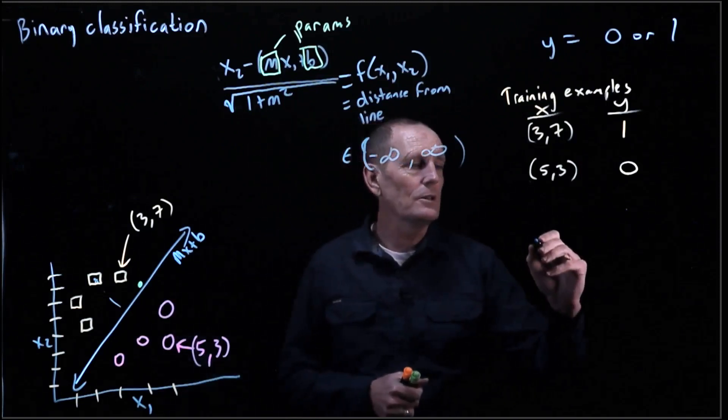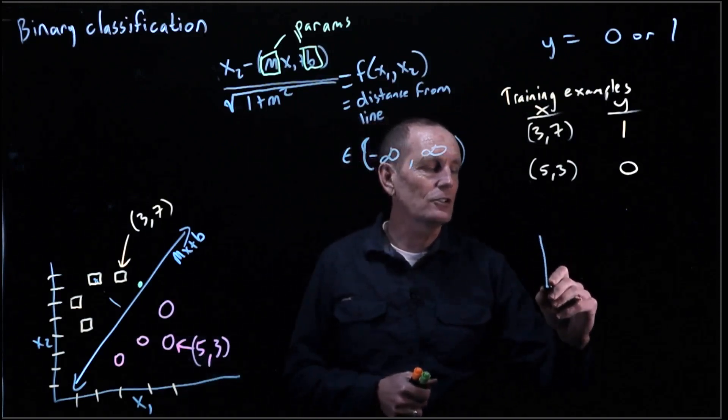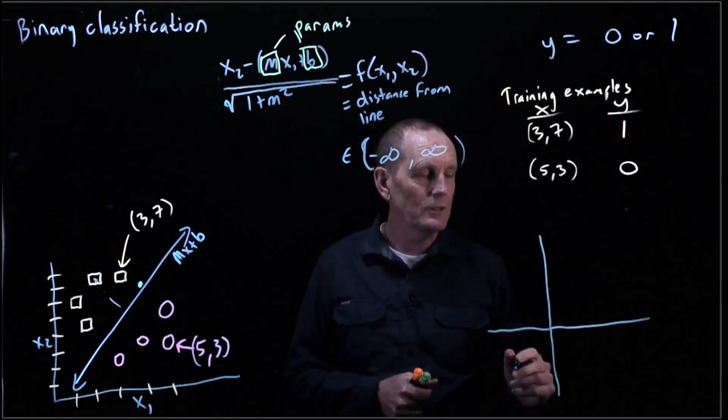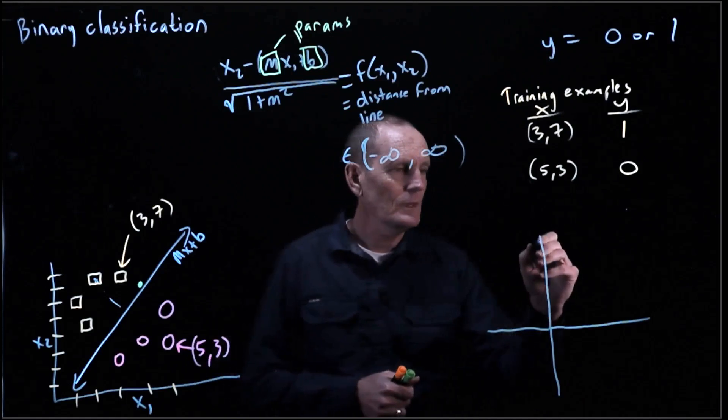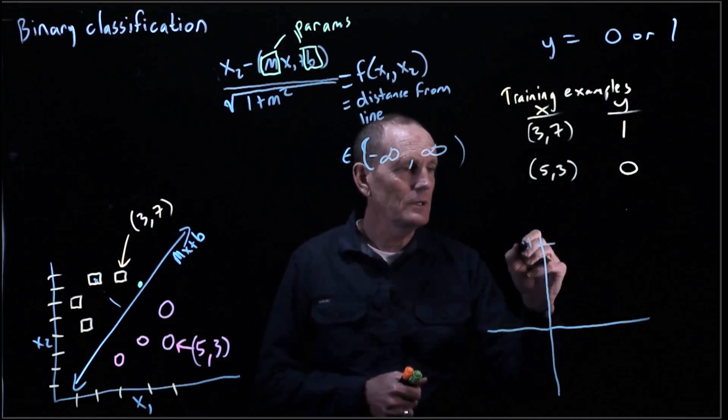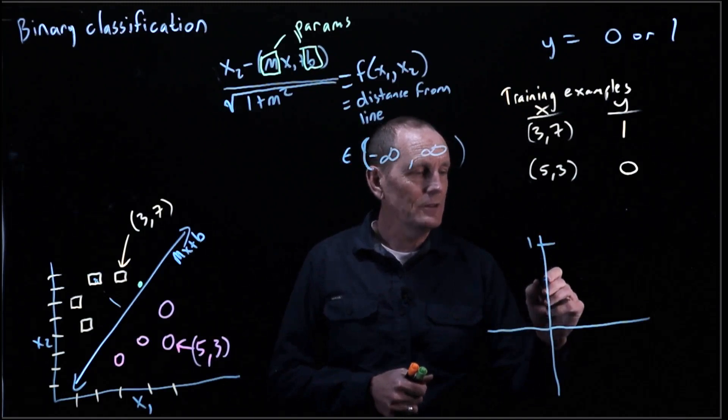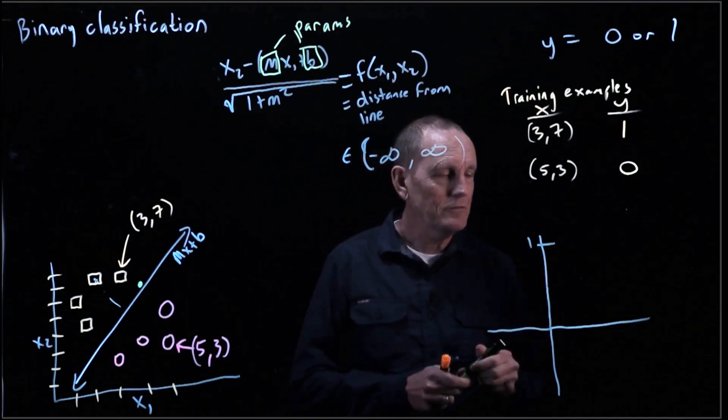So we're going to go ahead and do that with a particular function. So our function is going to have the following form. So let's make this be 1. This function, when x is 0, is going to have a value of 1 half.